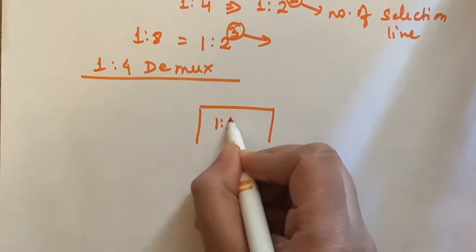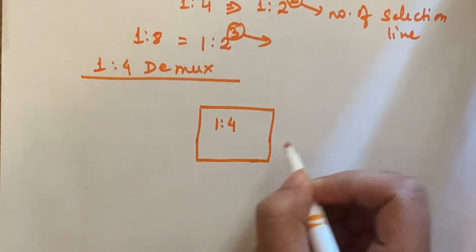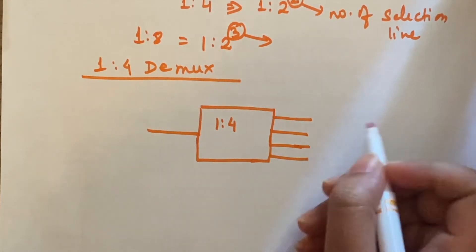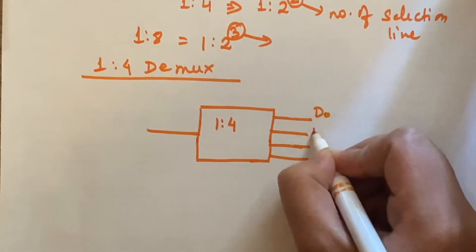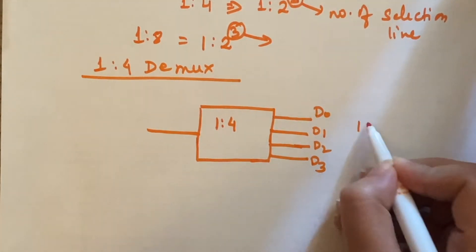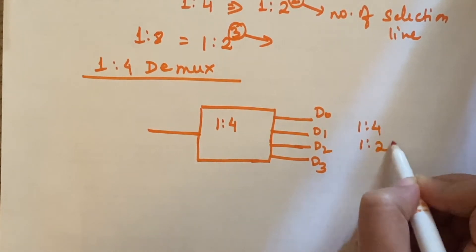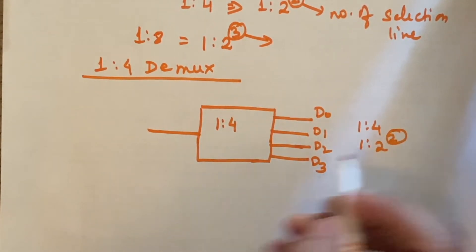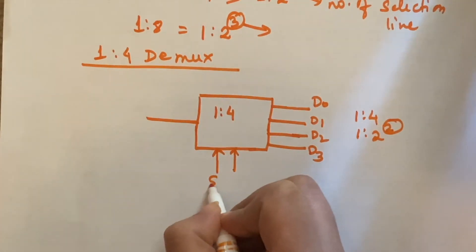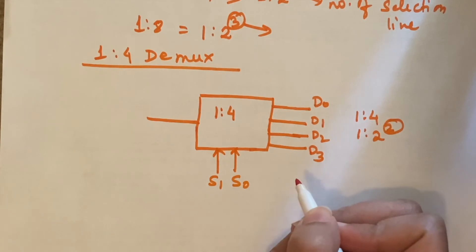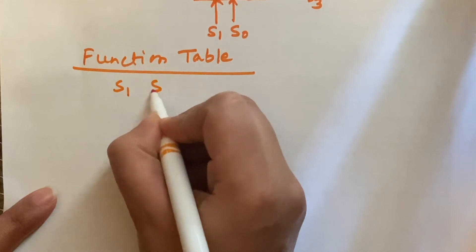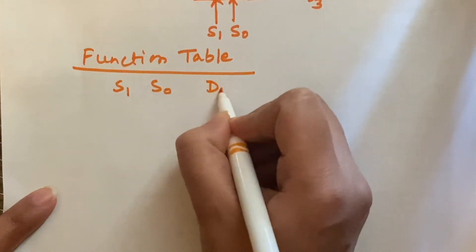The block diagram for a 1-to-4 DEMUX has one input and four output lines: D0, D1, D2, and D3. Since 1-to-4 equals 1-to-2², two will be the number of selection lines: S1 and S0. Now we will check the function table, which has two selection lines S1 and S0 and four output lines.